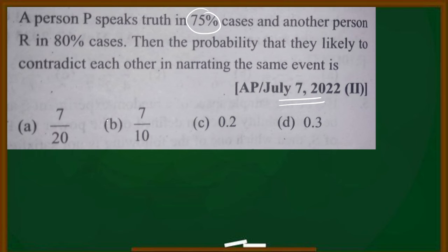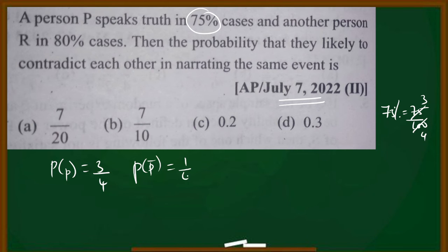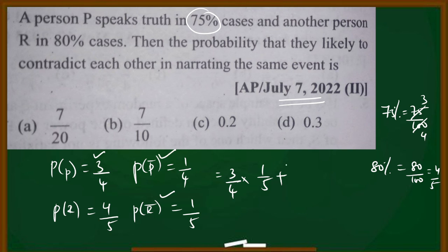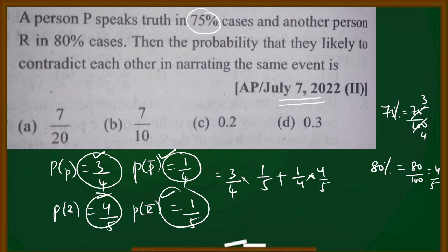Same question appeared in 2022, but with percentages. P speaks truth 75% of the time, so P(P) = 75/100 = 3 by 4, and P(P complement) = 1 by 4. R speaks truth 80% of the time, so P(R) = 80/100 = 4 by 5, and R false = 1 by 5. Contradiction probability: P true and R false = 3/4 × 1/5 = 3/20, plus P false and R true = 1/4 × 4/5 = 4/20. That equals 7 by 20 — same answer.